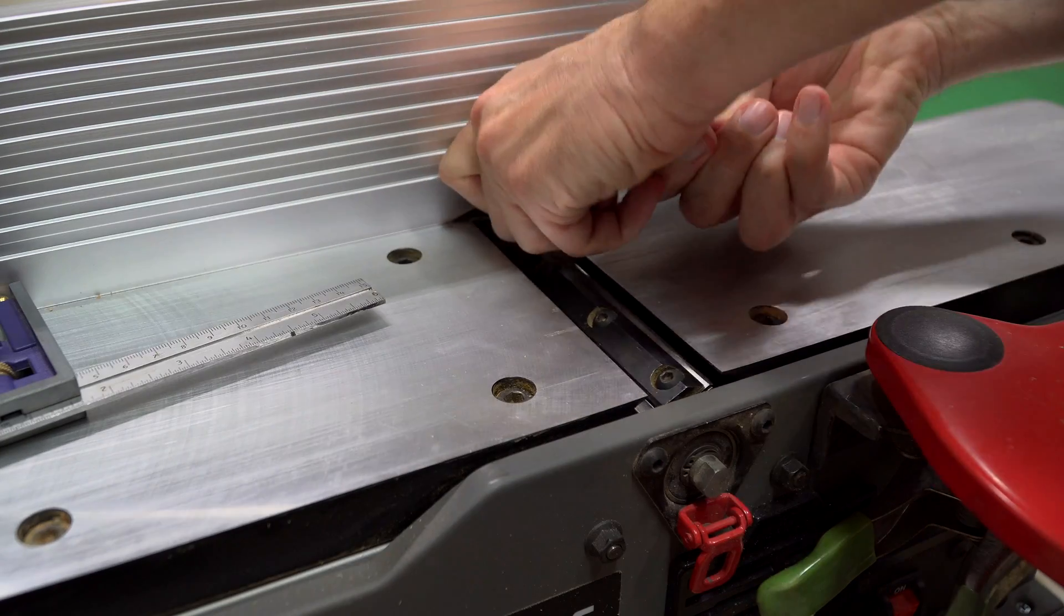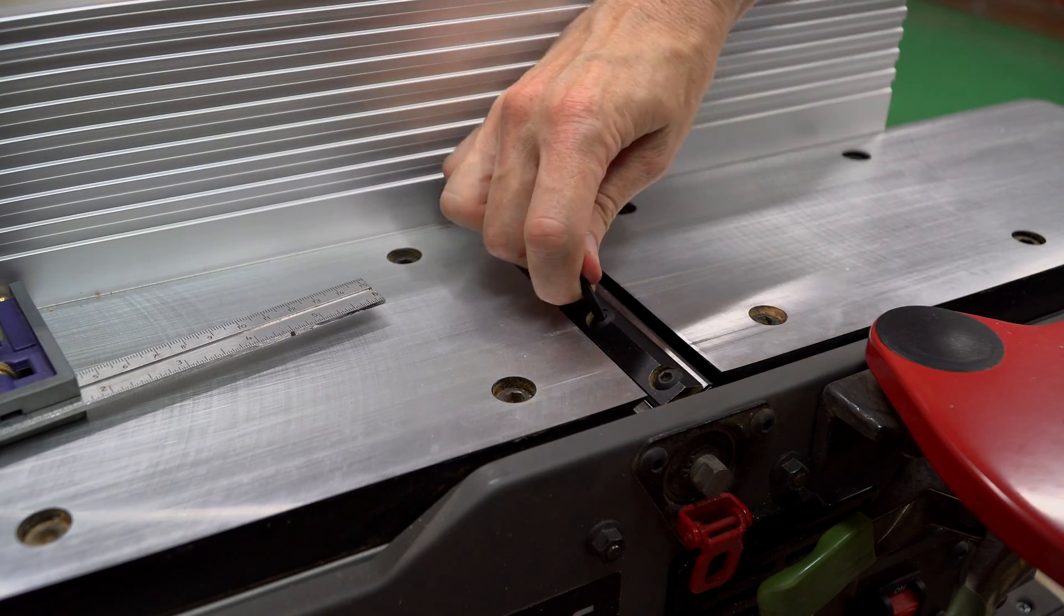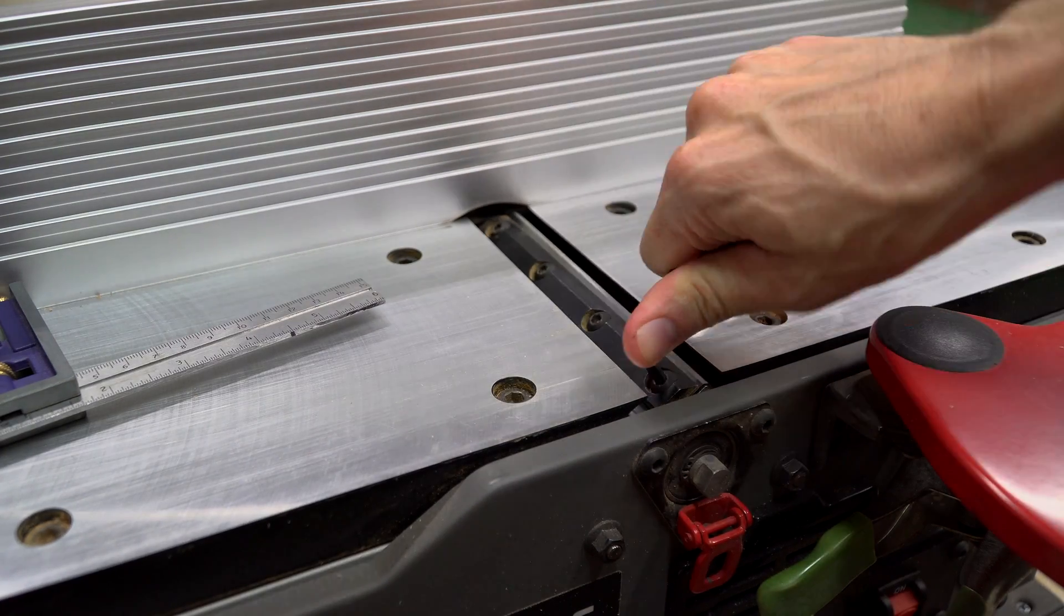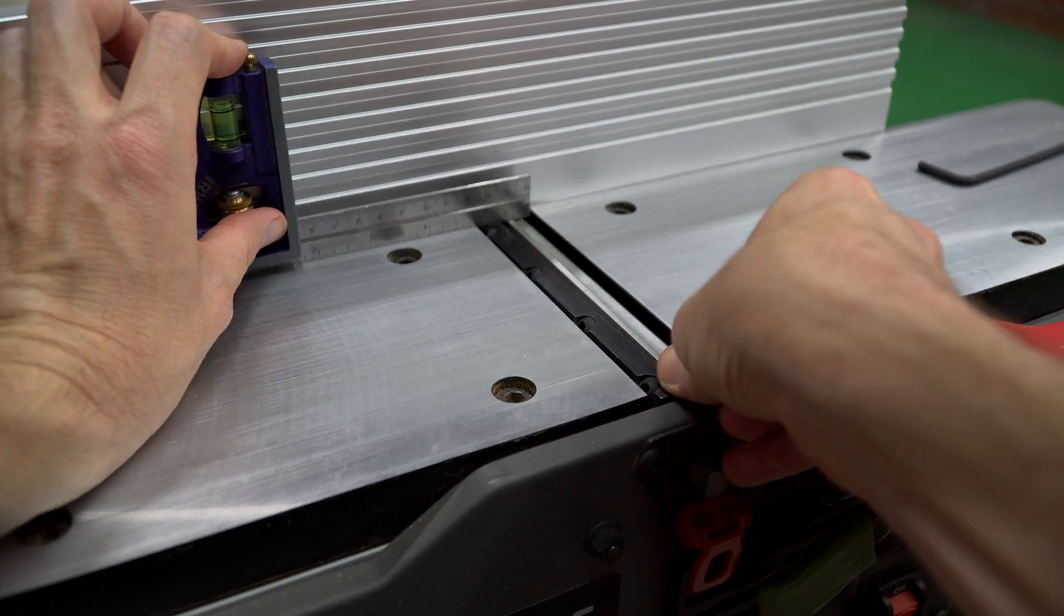If everything looks good, you can now fully tighten the screws. To check the blade's height, set your ruler on the outfeed table again, and slowly roll the cutter head back and forth.